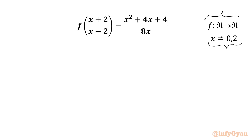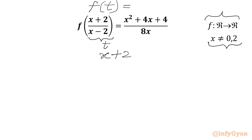Let us get started by considering the method of substitution. I will put this bracket equal to t, so we write LHS as f(t). We need to know x as a function of t for our RHS. So let us find out. I will write (x+2)/(x-2) = t. This is our substitution.